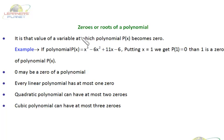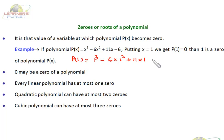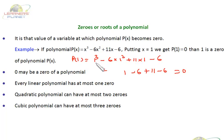Let's put the value of x as 1. p(1) = 1³ - 6×1² + 11×1 - 6, which is 1 - 6 + 11 - 6 = 0. So if I put x = 1, I get the value of this polynomial as 0. That means 1 is the root or zero of this polynomial.